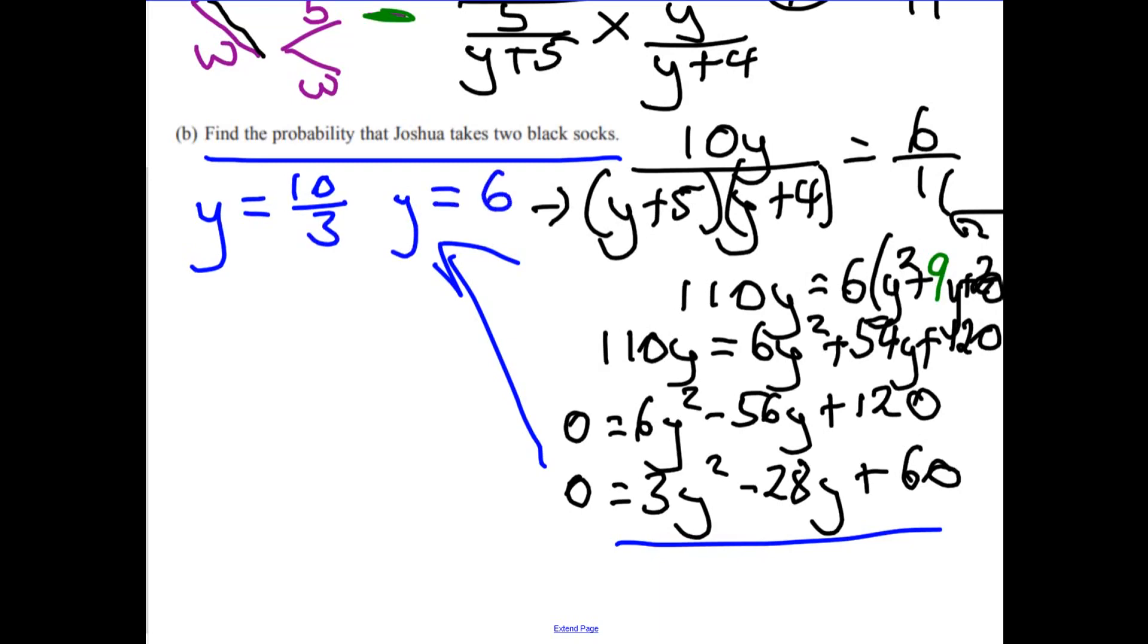Now clearly it can't be 10 over 3, it has to be a whole number, so therefore y has to be equal to 6. So there must be 6 black socks and 5 white socks.